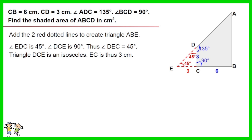Triangle DCE is an isosceles. EC is thus 3 cm. Angle DAB is 45 degrees. Triangle ABE is an isosceles. Thus AB is 9 cm.